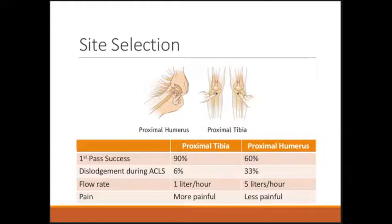There are some benefits to the humerus, though. It can tolerate a lot more fluid per hour — you can infuse fluids much faster — and it is significantly less painful. Pain is determined not by needle insertion but by the rate at which fluids are infused, and you can put a lot more fluids into the proximal humerus more comfortably compared to the tibia. So for conscious, less urgent patients, the proximal humerus might be a better option, whereas in a code situation where you need to be fast and successful, the proximal tibia is probably the best choice.